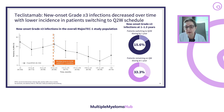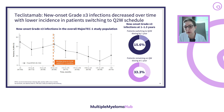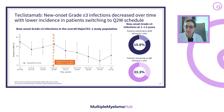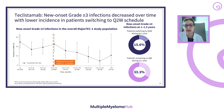This trend seen in CAR-T has been replicated for bispecifics in the Teclistamab MajestiC-1 study. We see a decline in infection rate over time, and conversion from once weekly to every two weeks has made a dramatic impact on the frequency and rate of infections. However, this could be a matter of discussion, since the conversion to every two weeks is a result of response — so the reduced infection rate could be attributed to either the schedule change or the response itself.